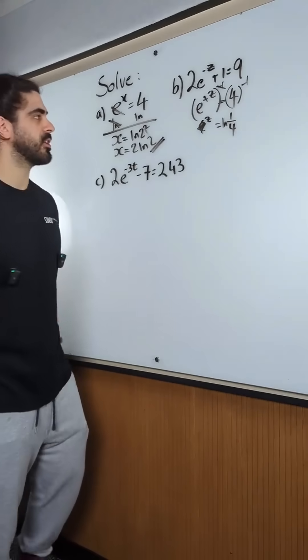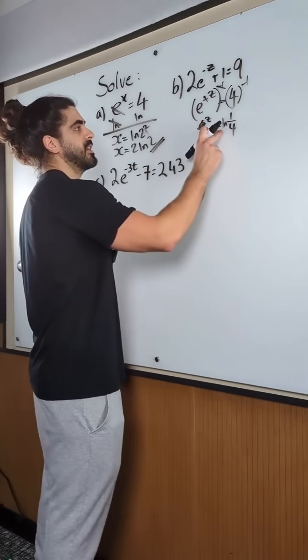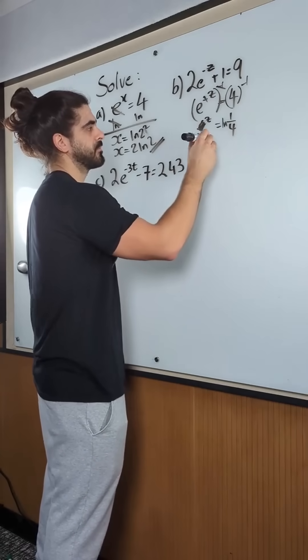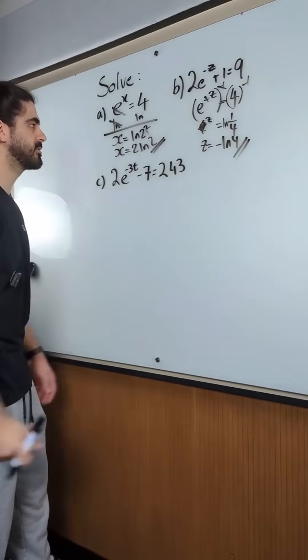Now if you ever write your answer like this, you're a bot. You should know that this is basically 4 to the minus 1, and you should bring down the minus 1. So this is minus ln 4. Get a little bit of variety in our answers.